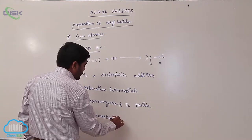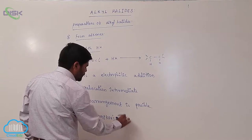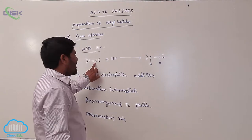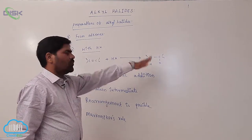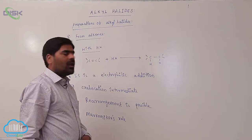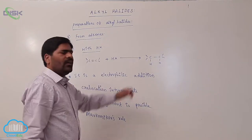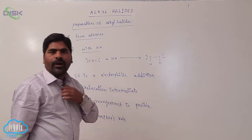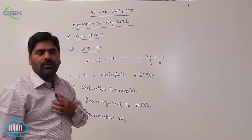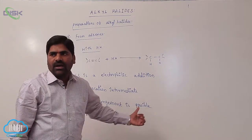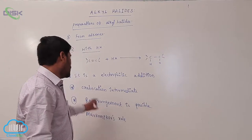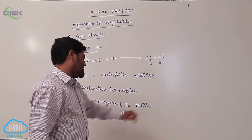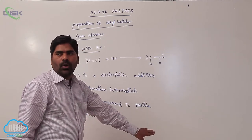So to summarize: an alkene reacts with hydrogen halide to form an alkyl halide via an electrophilic addition reaction. A carbocation intermediate is formed, so rearrangement is possible, and Markovnikov's rule is followed.